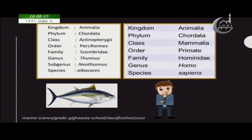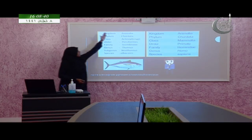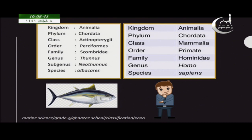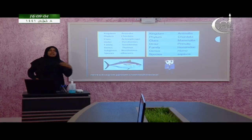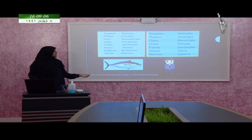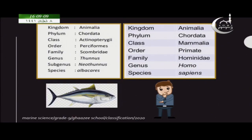The order of classification for tuna also starts from kingdom Animalia. The phylum is Chordata — all organisms having backbones come under phylum Chordata. That way it goes up to genus and species. Here you can also see sub-genus. Usually it is just genus and species, but in some groups sub-genus, sub-class, and sub-phylum also appear.